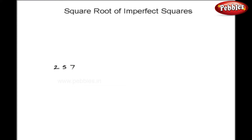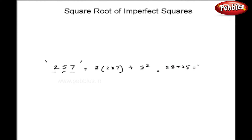Before going forward with the common method, we will see what is meant by Dvandva. Suppose you have the figure 257 and I want to find out the Dvandva of this figure. It is very simple: take the two corner digits and multiply by 2, then add the square of the middle number. So here I get 2×7×2 = 28, plus 5² = 25, giving 53. So 53 is the Dvandva of 257.